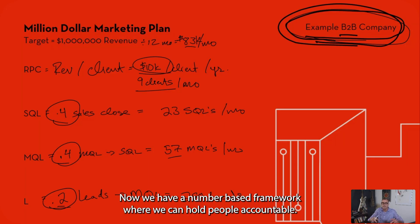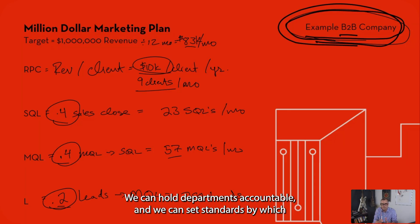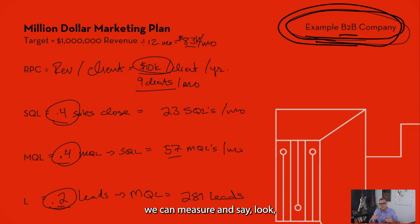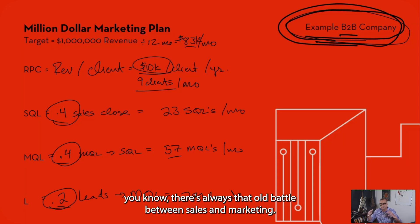Now we have a number-based framework where we can hold people accountable, we can hold departments accountable, and we can set standards by which we can measure and make decisions. There's always that old battle between sales and marketing.